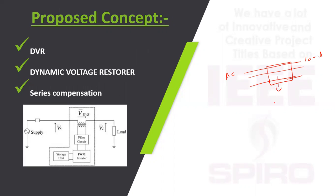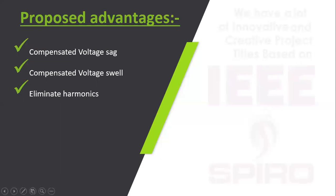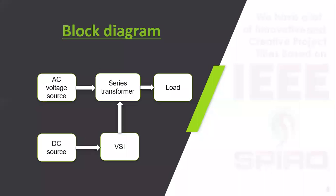The DVR is comprised of a voltage source inverter, a DC source, and a battery storage unit, which supplies voltage to the voltage source inverter. This proposed concept is suited for voltage sag and voltage swell problems. The proposed advantages are that it compensates voltage sag and voltage swell and also eliminates harmonics.